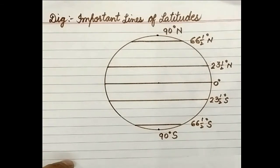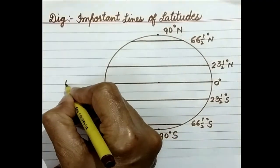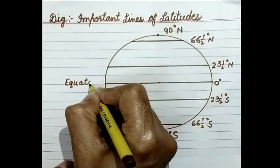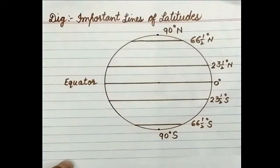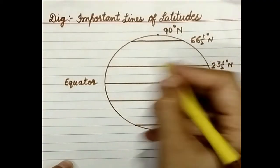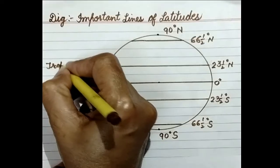First of all, 0 degree will be labeled as equator. 23 and half degree north will be Tropic of Cancer.